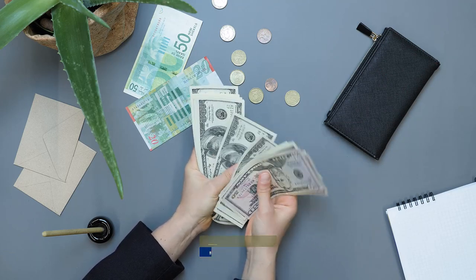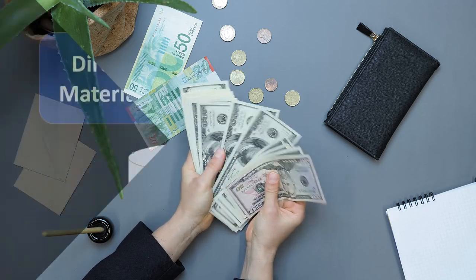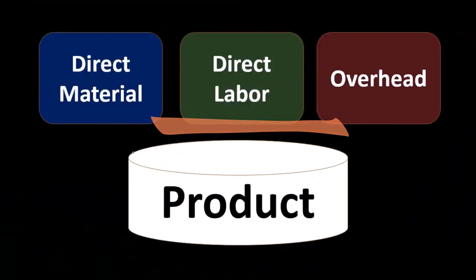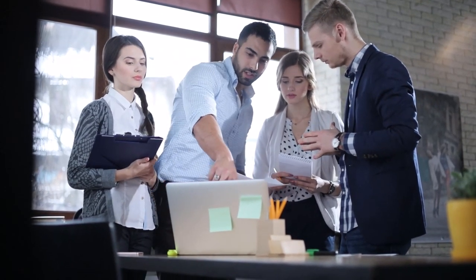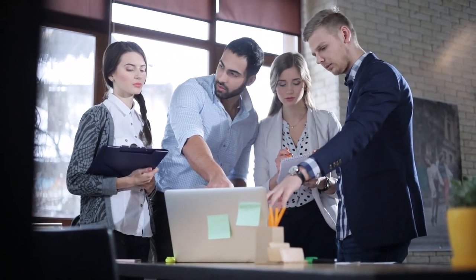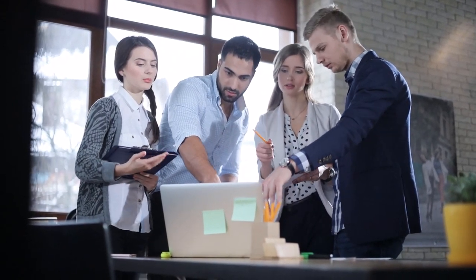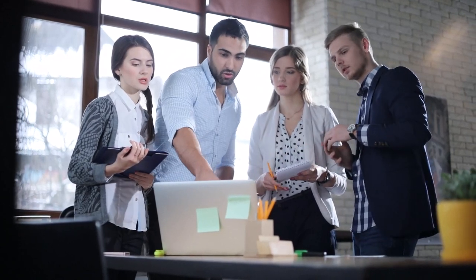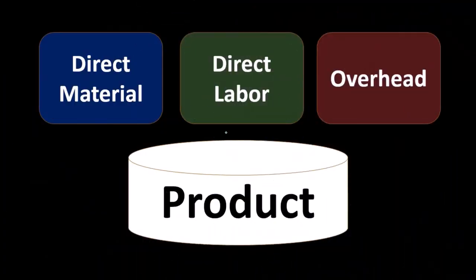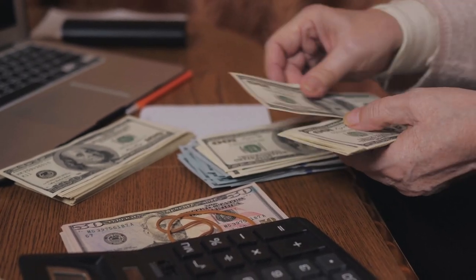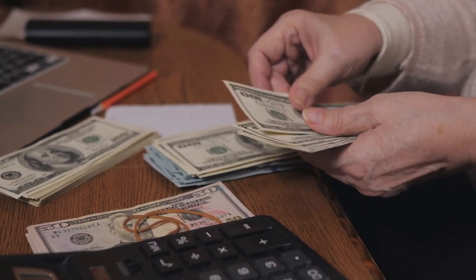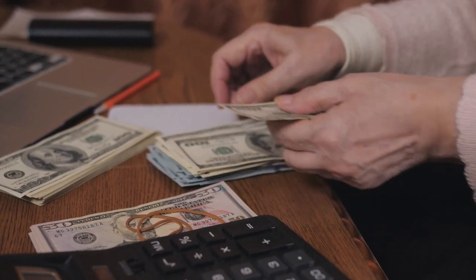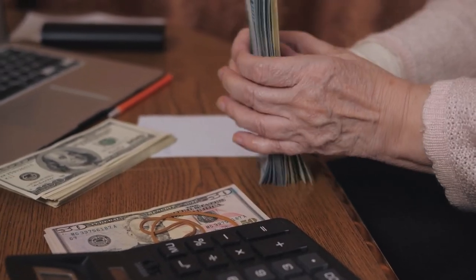We are talking about a manufacturing company and are going to apply these three items because we are the individuals manufacturing the product. It's not just the materials within the product — that's one component — but the other component is going to be the labor that we put into it. The cost of the labor, the wages we pay, are not going to be a period expense but will be part of the cost of inventory, to be capitalized and put on the balance sheet as an asset until we sell the inventory.